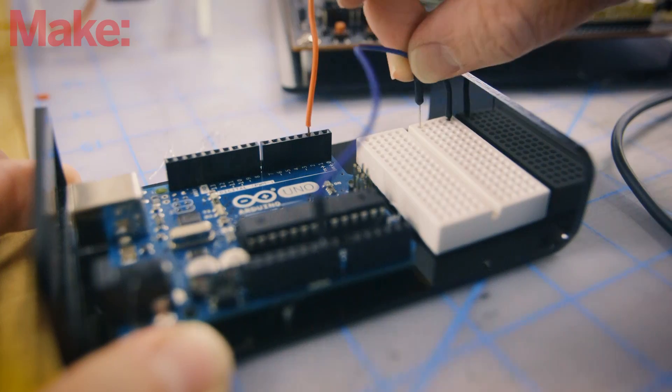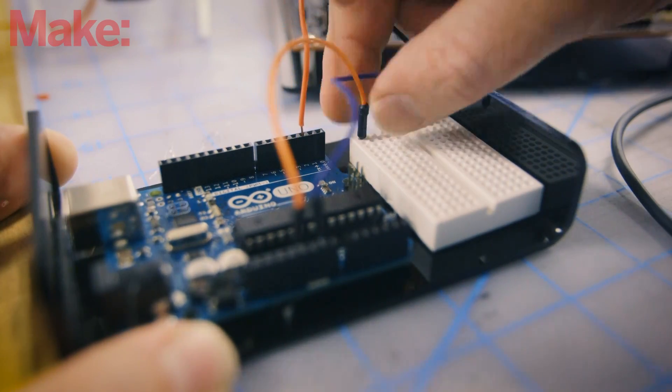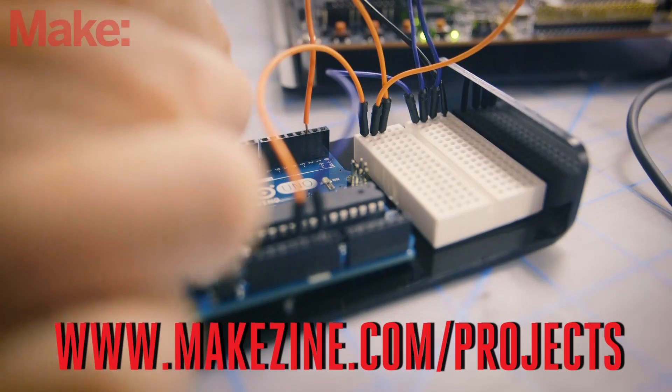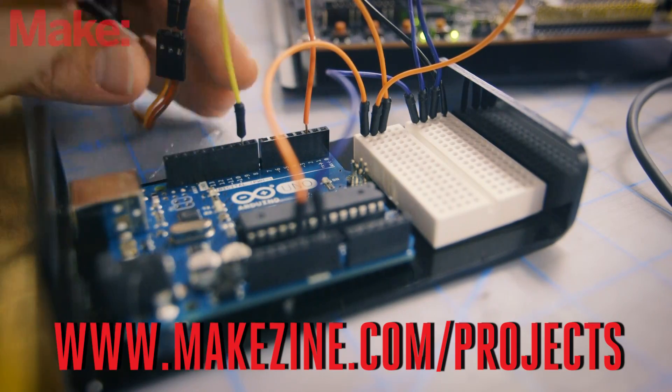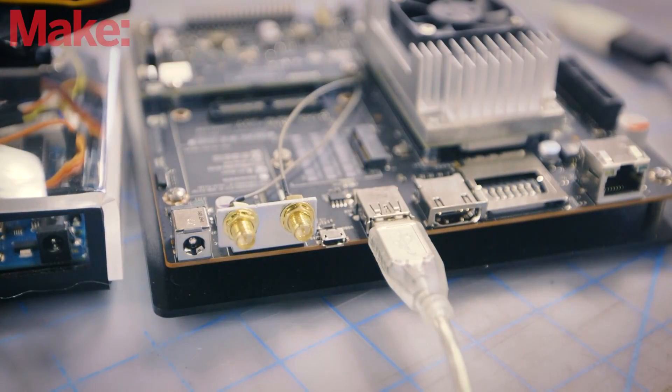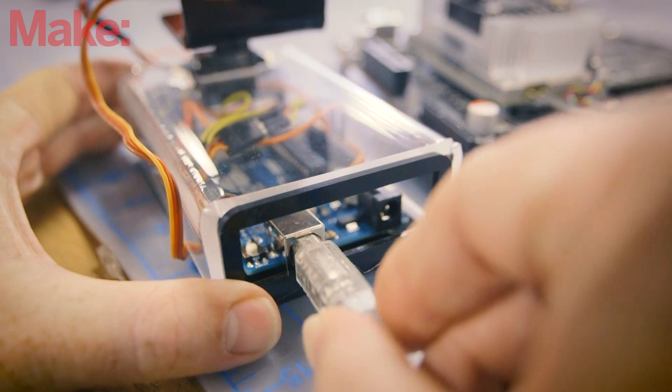Connect the laser and the two servos to the Arduino and then upload the sketch. Check the link below to get the sketch. With the image installed onto the Jetson board, connect the Arduino via USB and test it out.